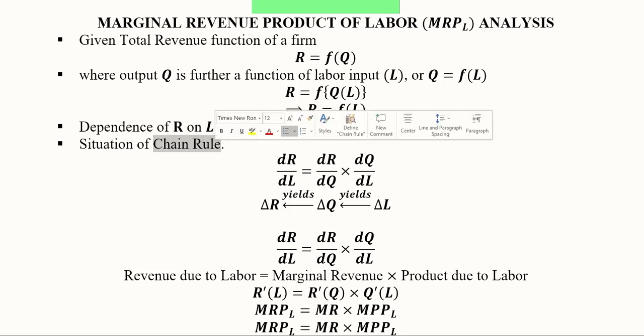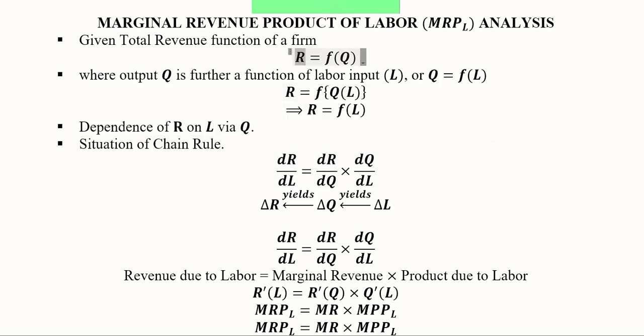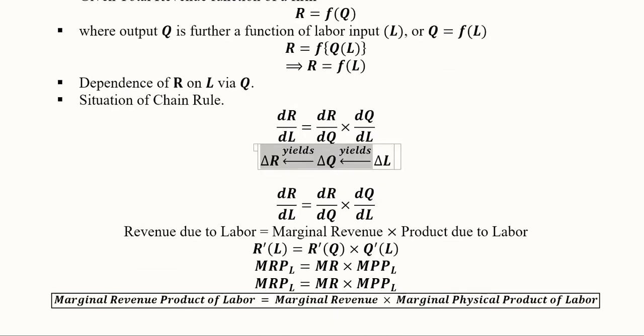It's a situation of the chain rule because there are two functions. First one is this one, second one is this one, and there are three variables: that is labor, output, and revenue. For that, the chain rule will look like this. The effect of labor on output and effect of output on revenue, getting cancelled, we will get the effect of labor on revenue. So the change in labor will lead to a change in output, and that change in output will finally give us some revenue. Using this chain rule, we can put the values.